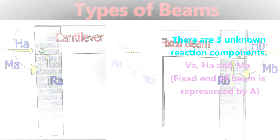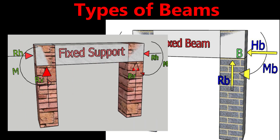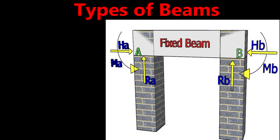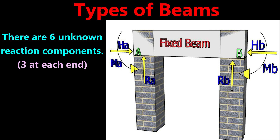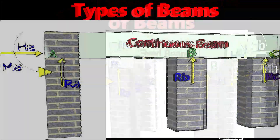The third type is the fixed beam. As the name suggests, both ends are constructed into the wall or column, forming a rigid or fixed end support. In a fixed support there are three reaction components: vertical, horizontal, and moment. Since both ends are fixed, there are six unknown reaction components in total — three at each end. These cannot be determined by equilibrium equations alone, so a fixed beam is a statically indeterminate beam. Fixed beams are seen in high-rise buildings and steel structures.